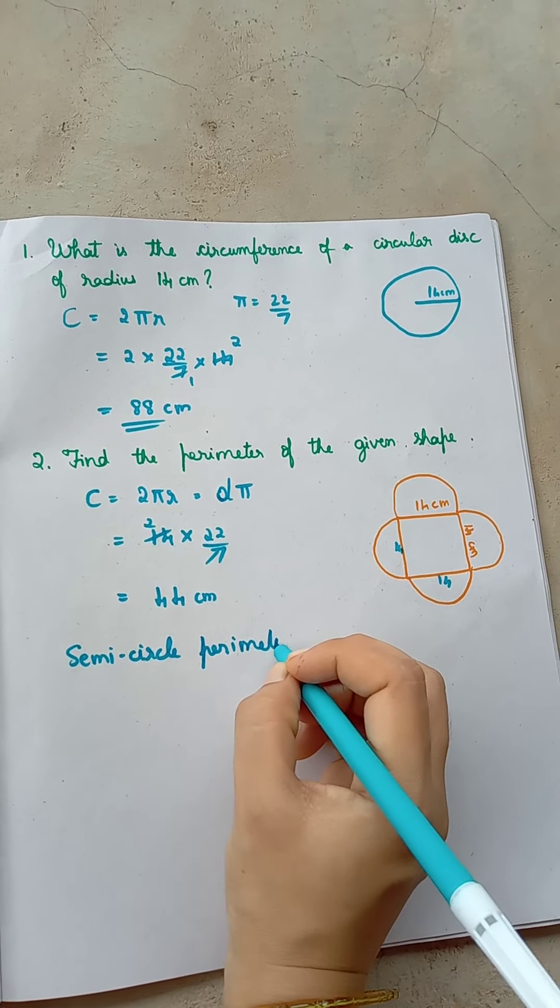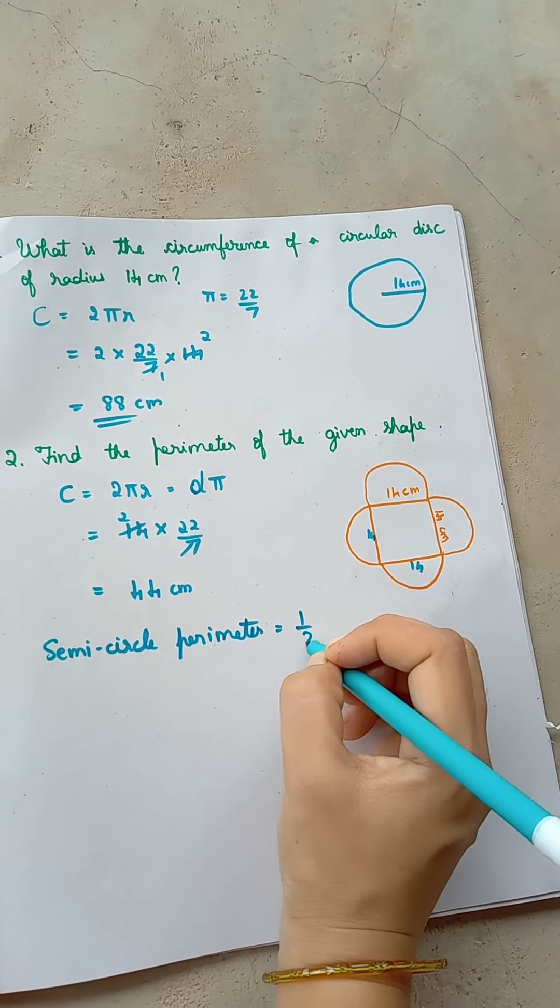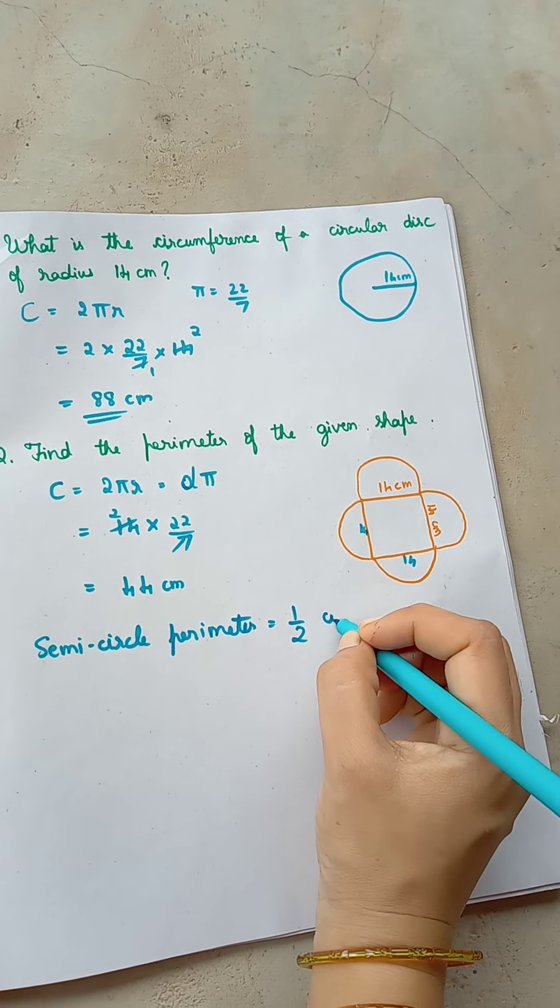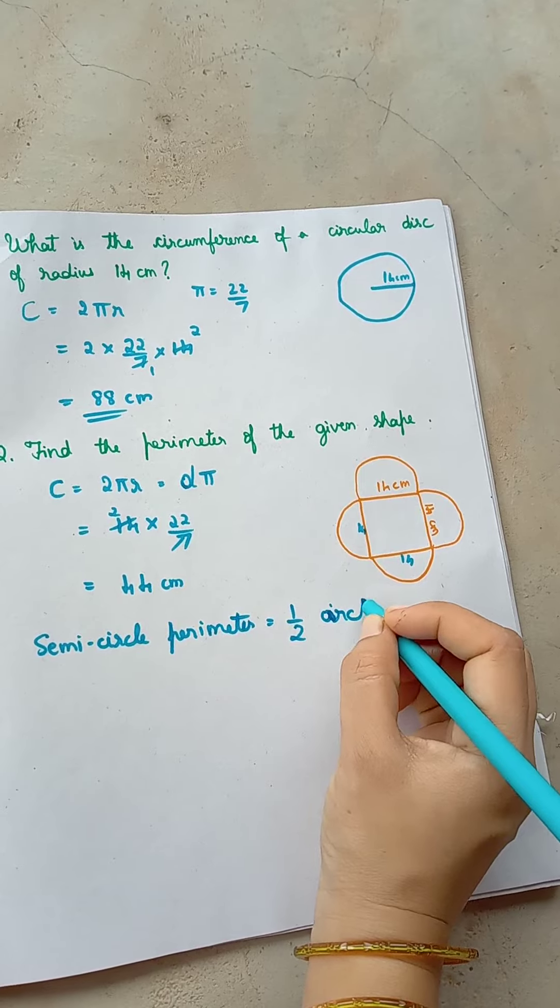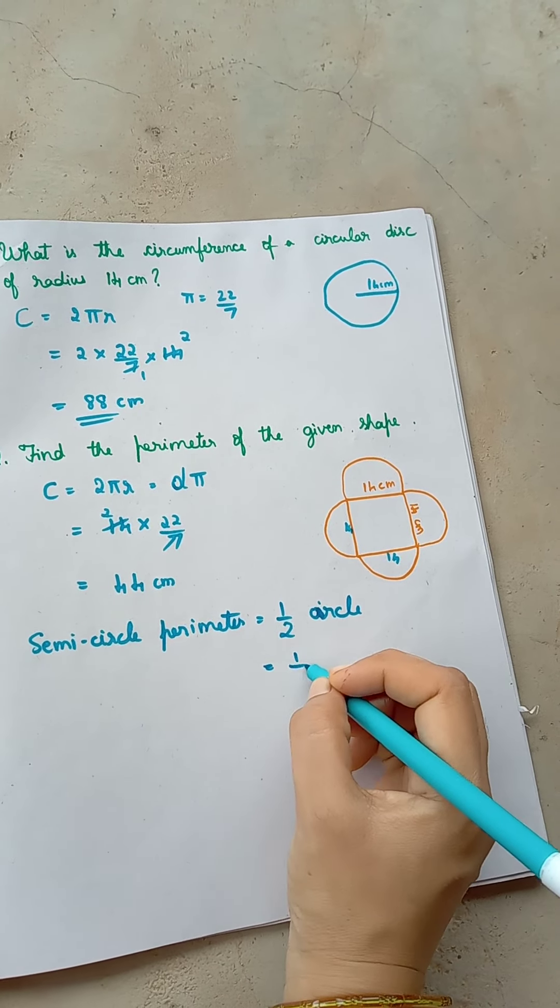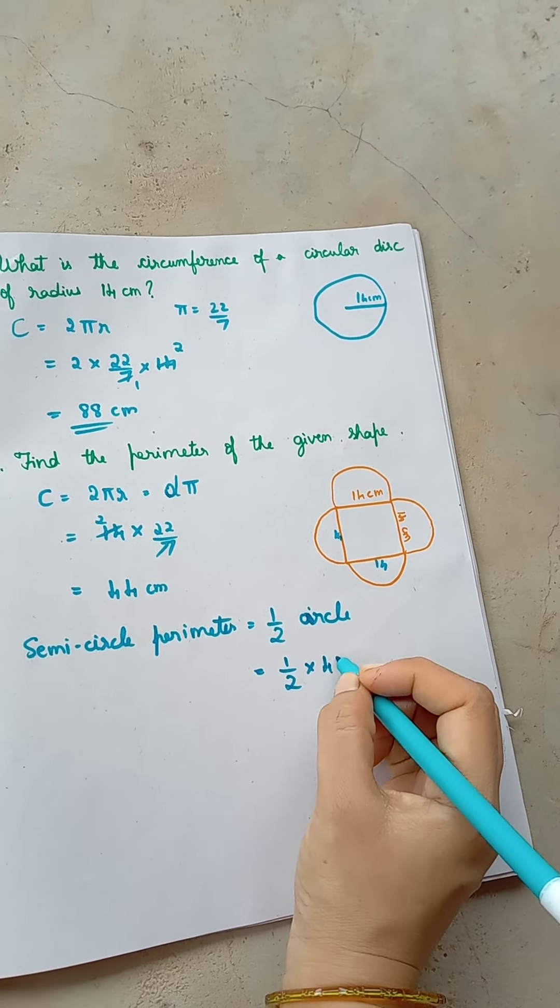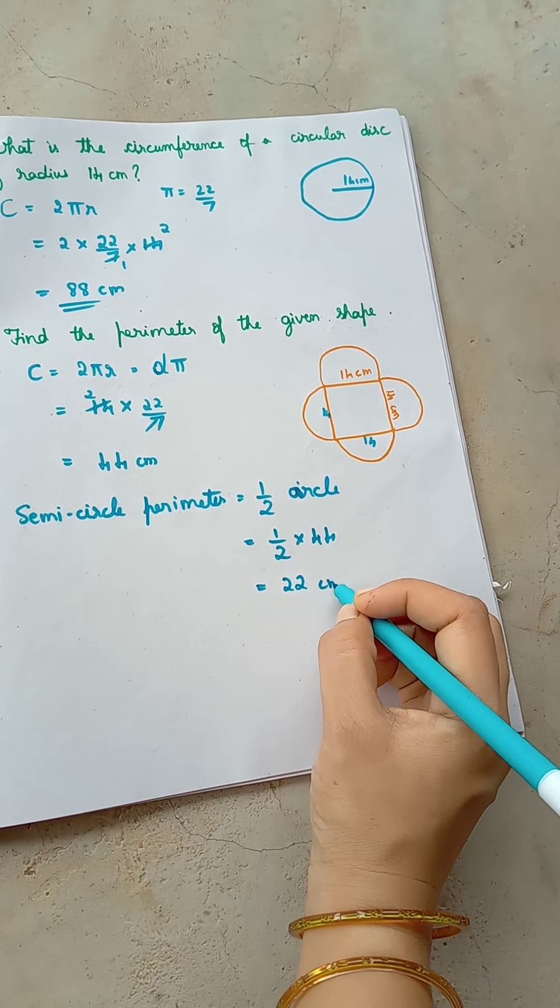Semicircle perimeter is equal to half of the circumference, so half into 44, which is 22 centimeter.